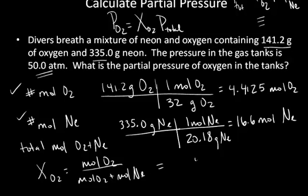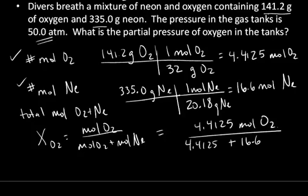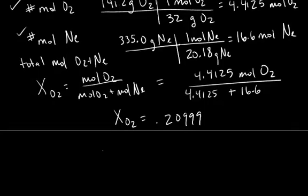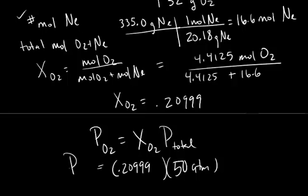Now to get the partial pressure of oxygen, it equals the mole fraction of oxygen times the total pressure. The total pressure was given as 50 atmospheres, and the mole fraction is 0.20999. So the partial pressure of oxygen equals 0.20999 times 50 atmospheres, which rounds to 10.50 atmospheres.